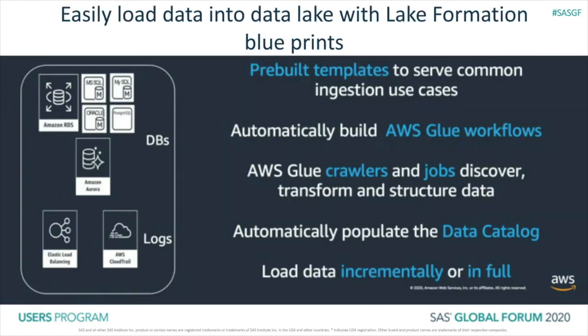In order to understand how data is moved from source to destination, let's take a look at how data is loaded through blueprints. Blueprints are pre-built templates that serve very common use cases of ingestion. For example, you might have data that moves from OLTP databases such as Amazon RDS, or from access logs in CloudTrail or from ELD. Once that data is available, a Glue workflow is automatically built using a blueprint, and the crawlers and jobs automatically discover and transform the structured data from the source. A Glue catalog is populated, and all of the data can then be loaded from the source to the destination S3 buckets in an incremental or full fashion.